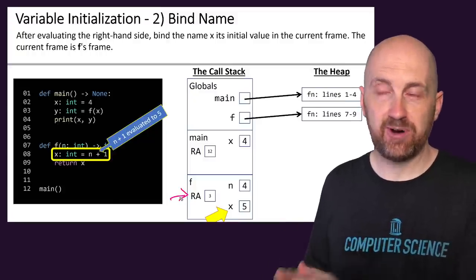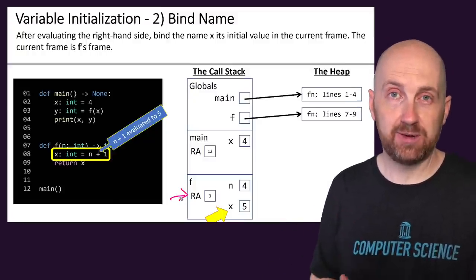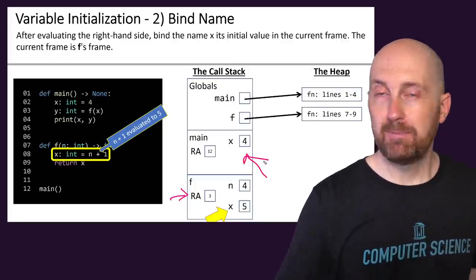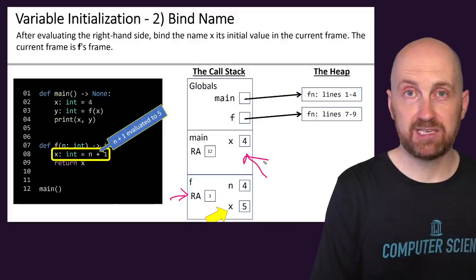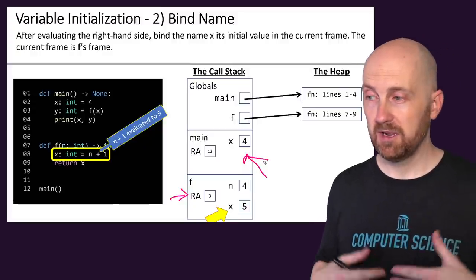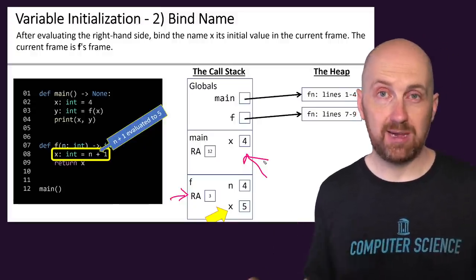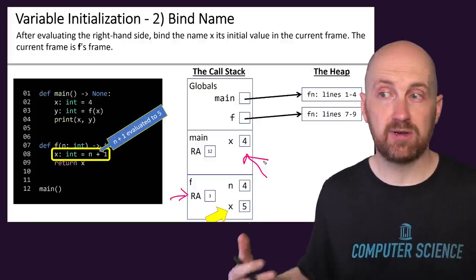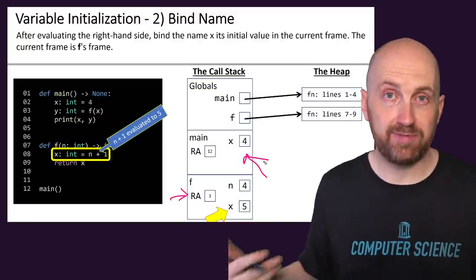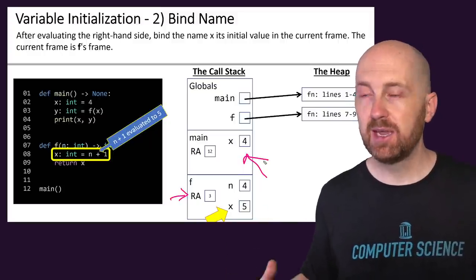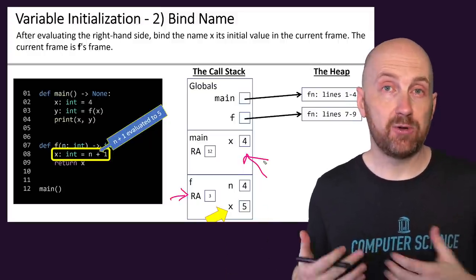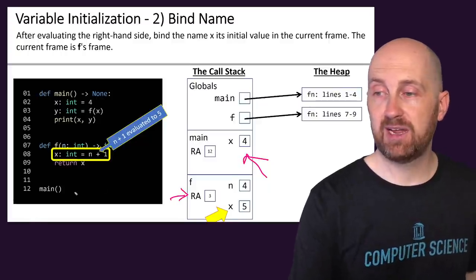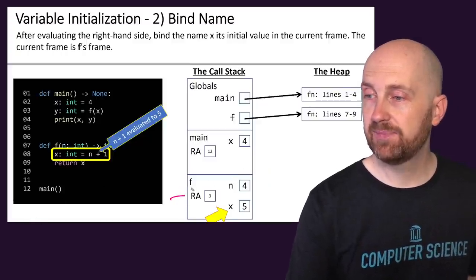So in the frame for f, we have an x variable whose value is 5. And that's different from main, where main also had an x variable whose value was 4. It's totally fine for the same variable name to be used in two different functions with two different values, because they're bound only within the frame of that function.